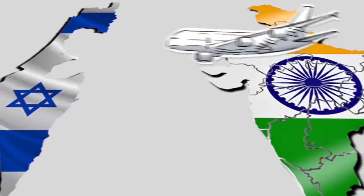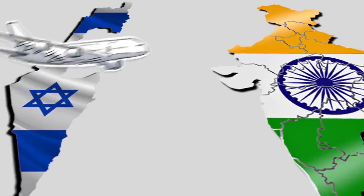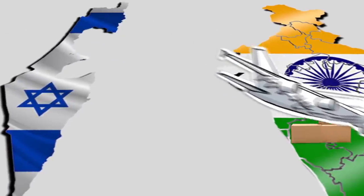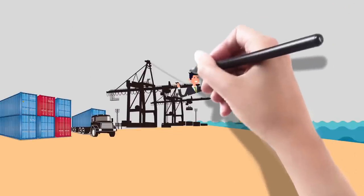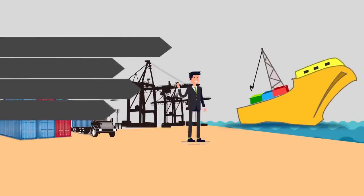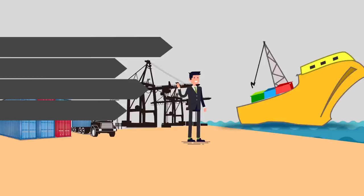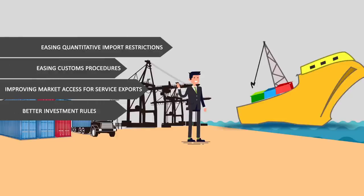Firstly, they cut down the duties on import of goods to and from the agreeing countries. Besides, they also work on easing out non-tariff barriers to exports, like easing quantitative import restrictions, easing customs procedures, improving market access for service exports, and better investment rules.